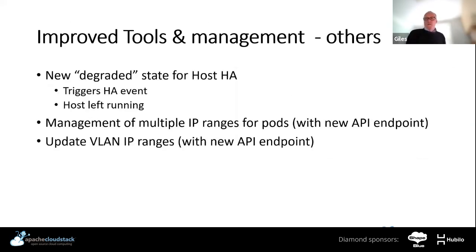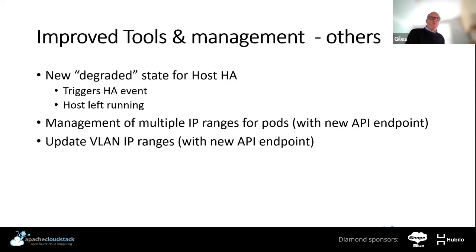We've now got a degraded state for CloudStack HA. Before, if you marked a host as down, CloudStack would try to shut that host down. Now I can say a host is degraded, which triggers a host HA event to take workloads off that host but leave it running. There are also a couple of new API commands and user interface components: I can now manage multiple IP ranges for a pod and update VLAN ranges as well.